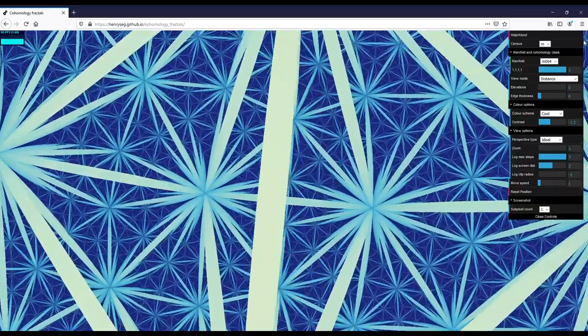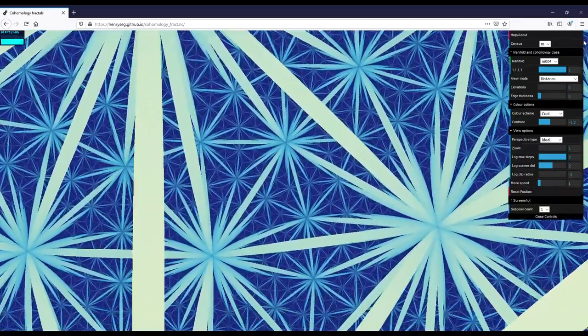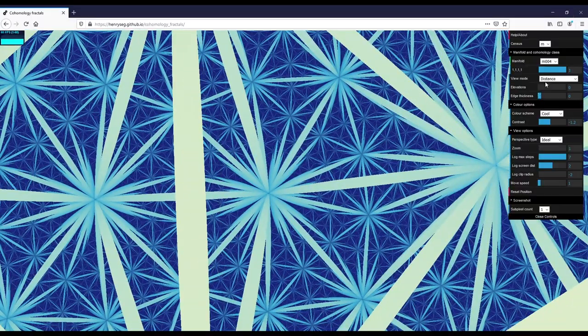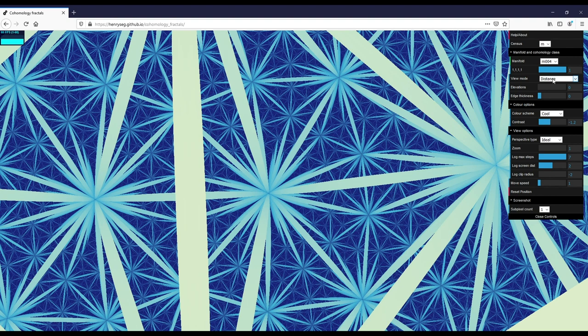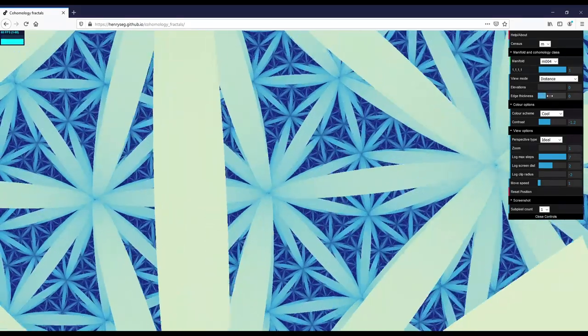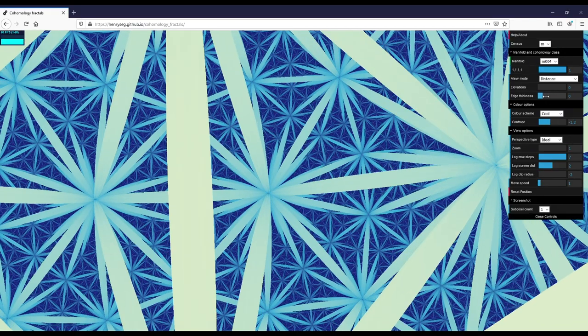To get to this mode where you can see these tetrahedra, what I did is I switched from the cohomology mode to the distance mode here, and I also increased the edge thickness. You can play with this to play with how thick the edges of the tetrahedra are drawn.